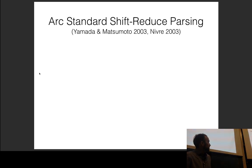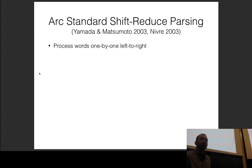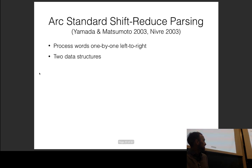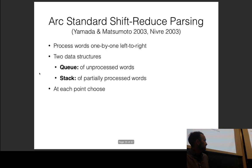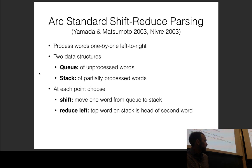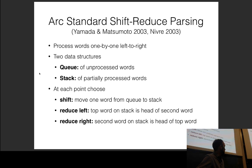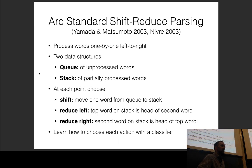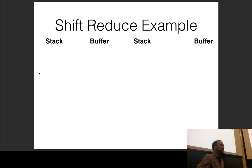Shift-reduce or incremental parsing processes words one by one left to right, building a tree via a few actions. It's based on two data structures: a queue of unprocessed words and a stack of partially processed words. At each step, you choose: shift (move one word from queue to stack), reduce-left (mark the top word as head of the second word), or reduce-right. This is essentially a three-class classification problem — pick the right action at each step.